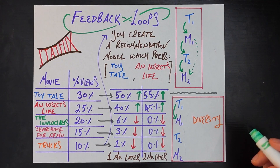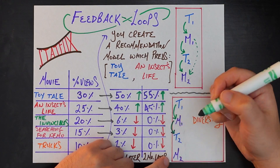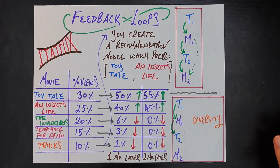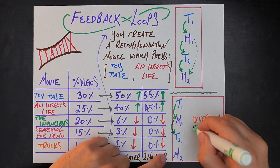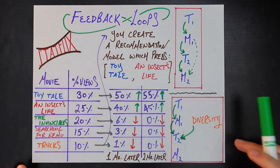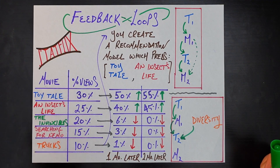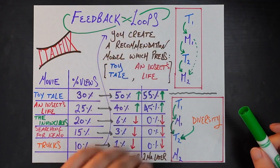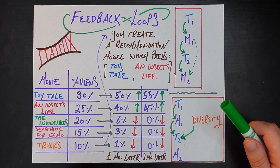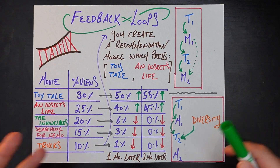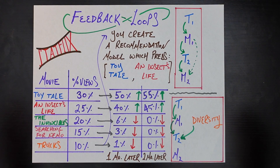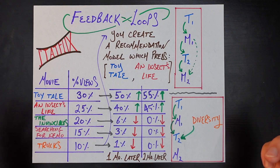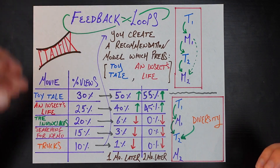Yes, that model is still going to have a big influence on the training data generated in time period two. But crucially, we're also going to intentionally introduce some diversity in generating that data. When we train that first recommendation model and it says Toy Tale and An Insects Life should be recommended, we're going to trust that for the most part — but still sample, for maybe 5 or 10% of users, something else from our inventory, just in case our model was incorrect.